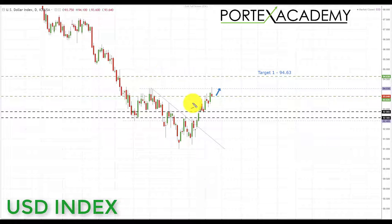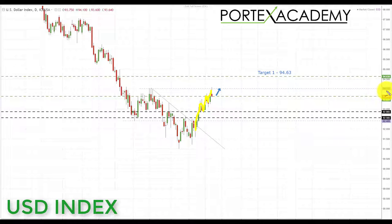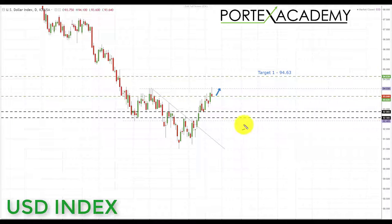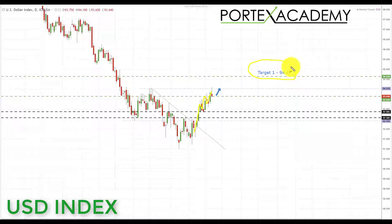Starting with the US dollar index, you can see it is still making higher highs and higher lows and the uptrend is still intact. However, last week we ran into the key area of resistance around the 93.640, as highlighted from last week's weekly Forex forecast, and we also ran into the highs from this previous area of consolidation. As long as the immediate trend is intact, we are going to have a bullish bias and we're looking for further advances up towards the target of 94.63.